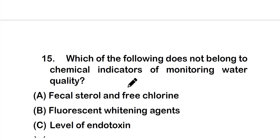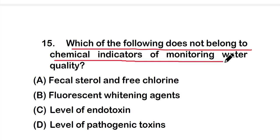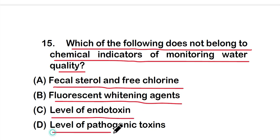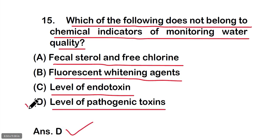Question fifteen: which of the following does NOT belong to chemical indicators of monitoring water quality? Options: fecal sterols and free chlorine, fluorescent whitening agents, level of endotoxin, or level of pathogenic toxins. The right answer is option D — level of pathogenic toxins is not a chemical indicator of monitoring water quality.